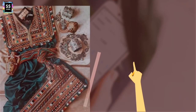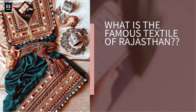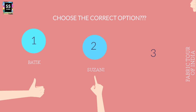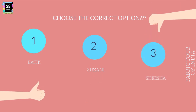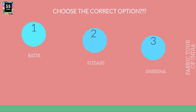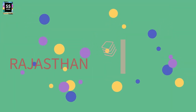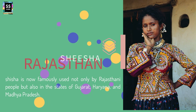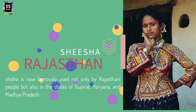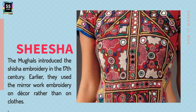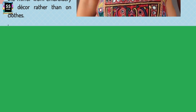State 4 on our list: as the picture suggests, it is Rajasthan. What is the famous textile of Rajasthan? The options are: Batik, Suzani, or Shisha. Batik and Suzani are techniques, and Shisha is also a technique. Shisha is famously used not only by Rajasthani people but also in Gujarat, Haryana, and Madhya Pradesh. Shisha was introduced by the Mughals in the 17th century — it is mirror-work embroidery done all over the clothes.